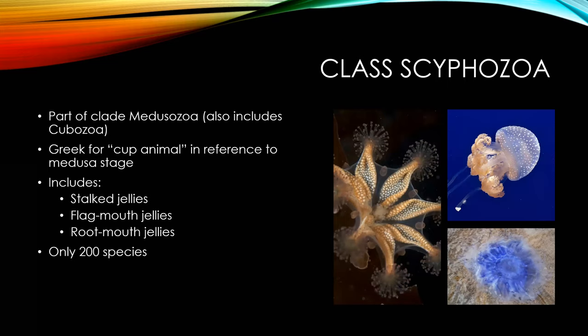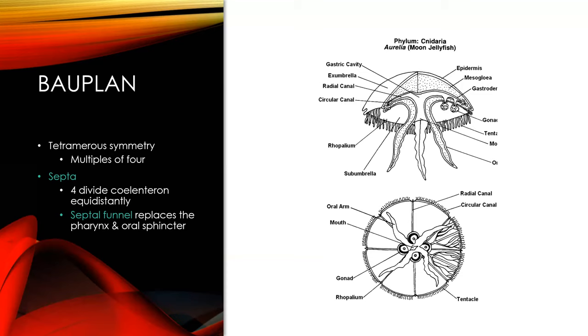Moving into class Scyphozoa — part of the clade Medusozoa, which also includes Cubozoa. The name is Greek for 'cup animal,' in reference to its medusa stage. This class includes stalked jellies, flag-mouth jellies, and root-mouth jellies — only about 200 species total, making it one of the smaller classes.